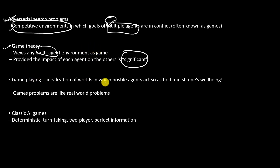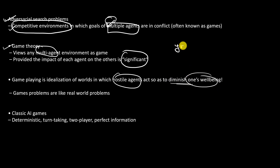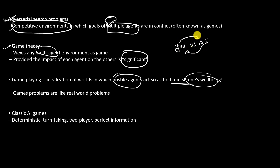Game playing is an idealization of worlds in which a hostile agent acts to diminish one's well-being. In tic-tac-toe, if you are playing against AI, AI will try to win the game and you will also try to win. AI will try to reduce your chances of winning, and you will also try to reduce AI's chances of winning. So agents act to diminish each other's well-being.